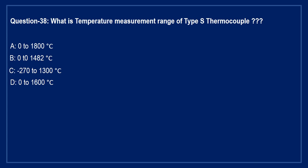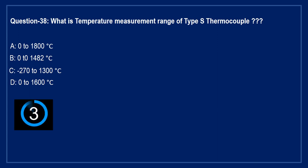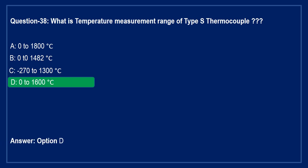Next question: what is the temperature measurement range of type S thermocouple? Option A: 0 to 1800°C. Option B: 0 to 1482°C. Option C: minus 270 to 1300°C. Option D: 0 to 1600°C. The right answer is Option D — the measurement range of type S thermocouple is 0 to 1600 degree centigrade.